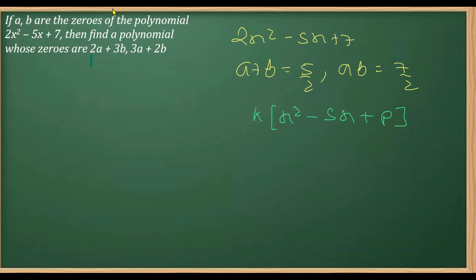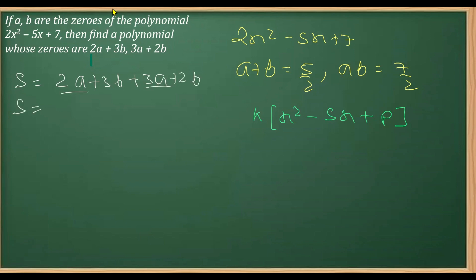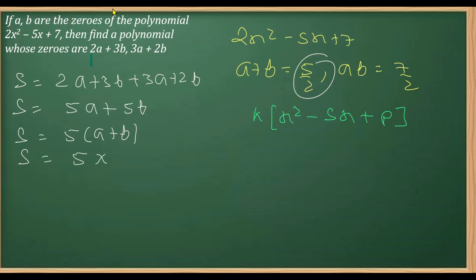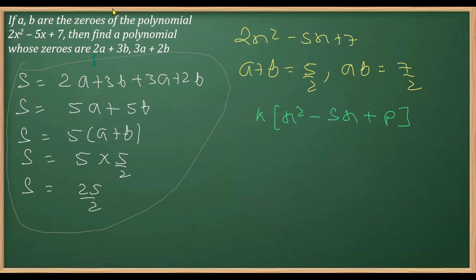Now we need to obtain the sum and product of the new zeros. The sum S is (2a+3b) + (3a+2b). Adding these: 2a+3a = 5a and 3b+2b = 5b. Taking 5 common gives 5(a+b). Since a+b = 5/2, the sum of the new zeros is 5 × 5/2 = 25/2.